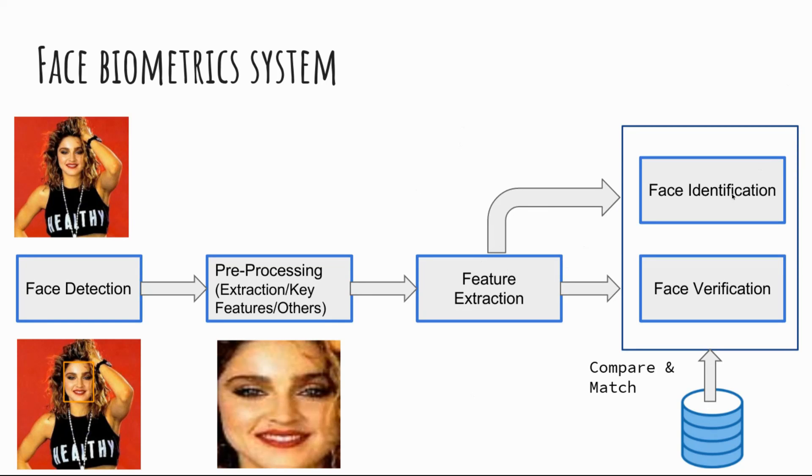They'll search this face against millions of other people to find out if it's a known suspect. That's where face identification comes in - it's one-to-many. You take one image and compare it against many. You can have a file system or database with all reference signatures or face identities to compare against. These are the different components you'll encounter in a face biometric system.